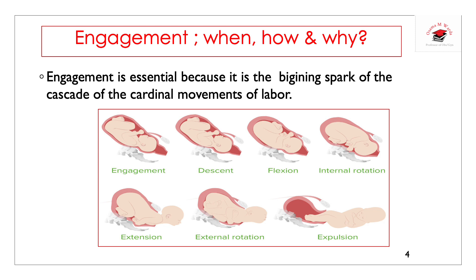Engagement is essential because it is the beginning spark of the cascade of cardinal movements of labor, which start with engagement, followed by descent, flexion, increased flexion, internal rotation (which is the most important cardinal movement of labor), then extension of the head, external rotation, restitution, and expulsion. Without engagement, labor is delayed and may not be completed.